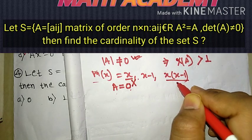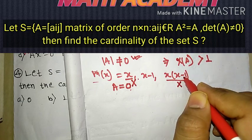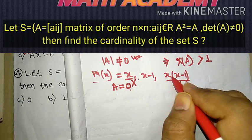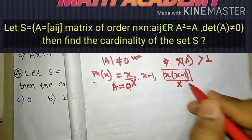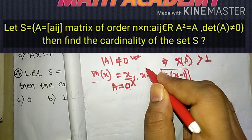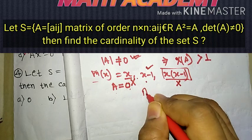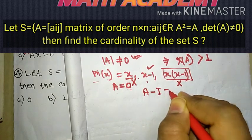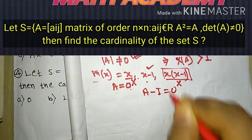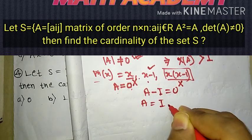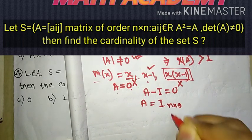Similarly, x times (x minus 1) is not possible by the same reason since zero is an eigenvalue. The only possibility for the minimal polynomial is x minus 1. Since every matrix satisfies its minimal polynomial, A minus I equals zero, meaning A is the identity matrix of order n by n.